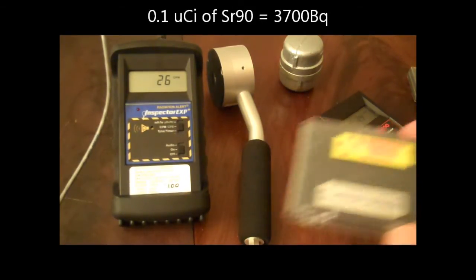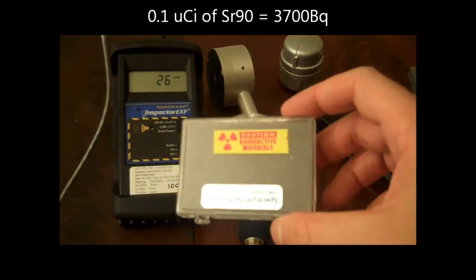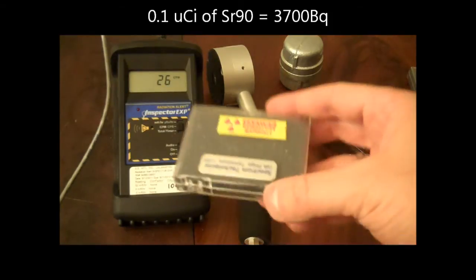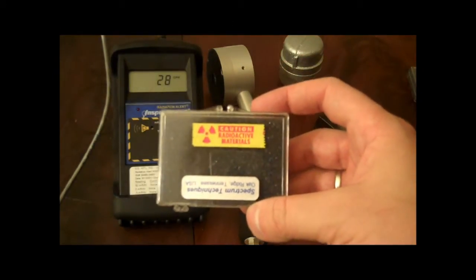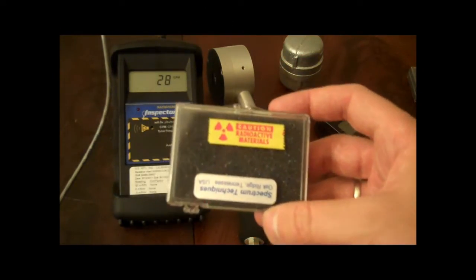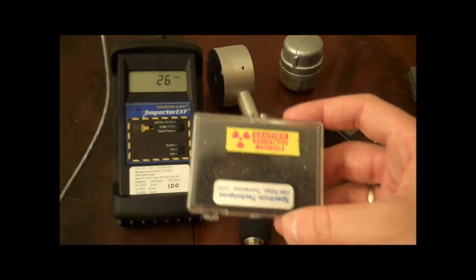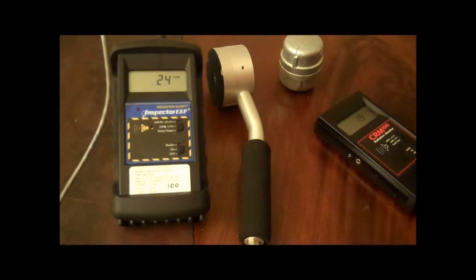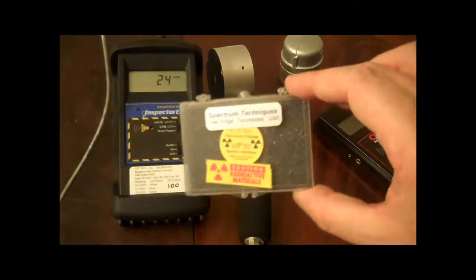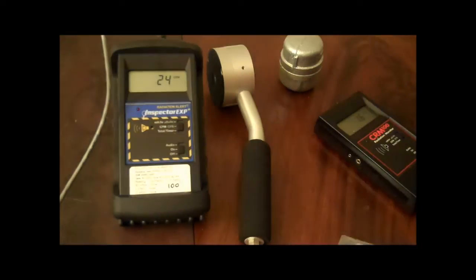I received, you don't see it inside here because it's actually inside of there, a one-tenth of a microcurie sample of Strontium-90. And of course I already have a tenth of a microcurie of Polonium-210. I will be doing my Geiger Counters 101 beta video, probably this weekend as a result of the fact that I now have a good beta source.